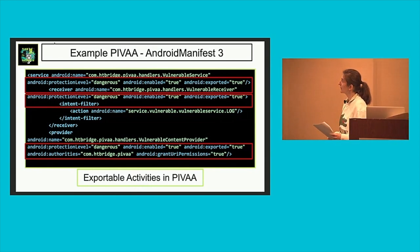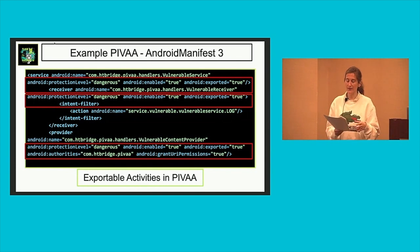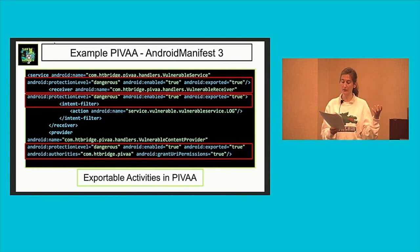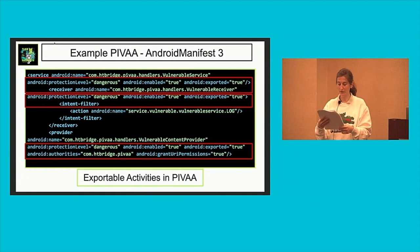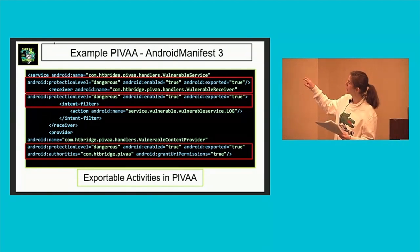These are the exportable activities from PIVA. Activities are screens of the app, and some activities should not be exported because that would mean they can be accessed from outside the app. You can check if they disclose sensitive data. In our example, we have three activities from PIVA that are exportable.